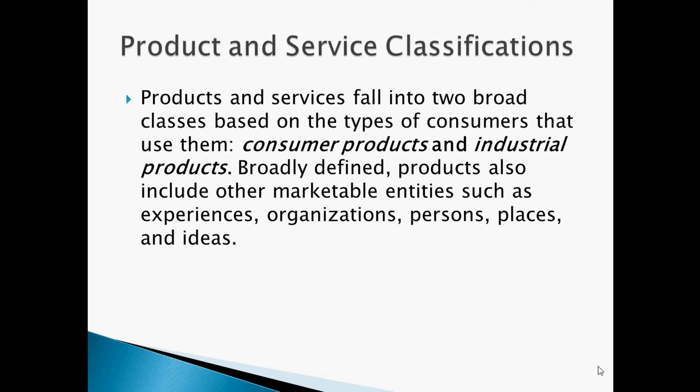Now we are going to look at product and service classifications. Products and services fall into two broad classes based on the types of consumers that use them: consumer products and industrial products. Broadly defined, products also include other marketable entities such as experiences, organizations, persons, places, and ideas.